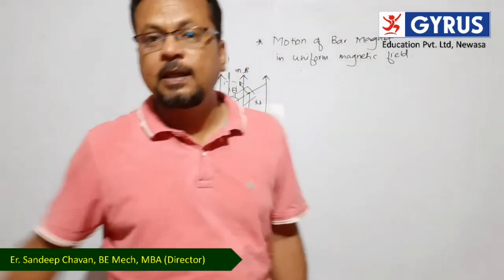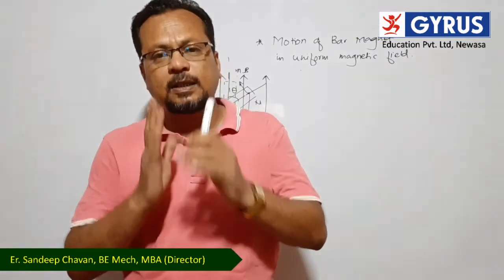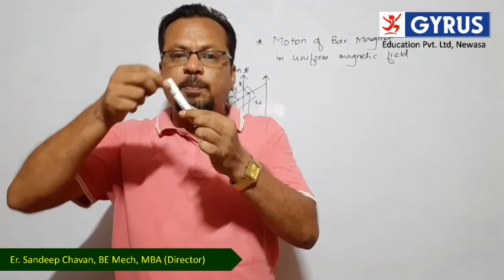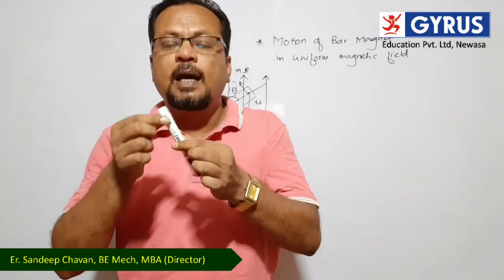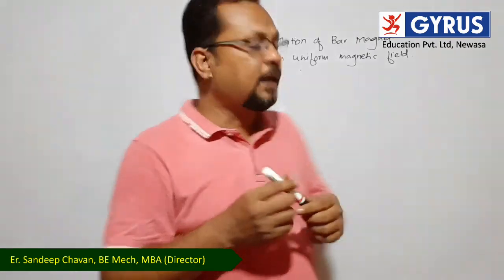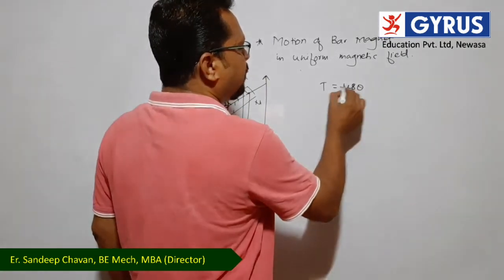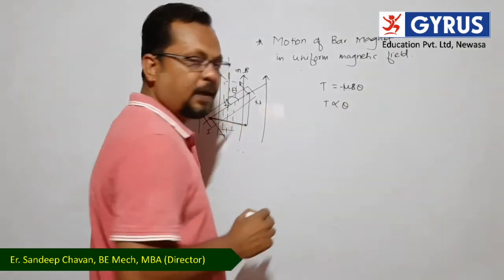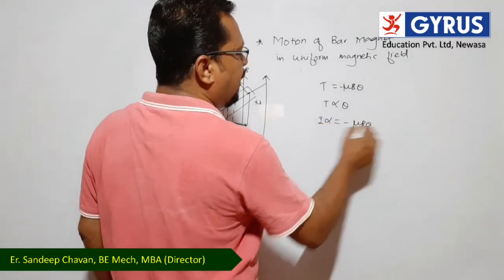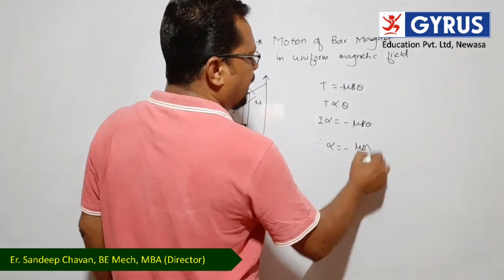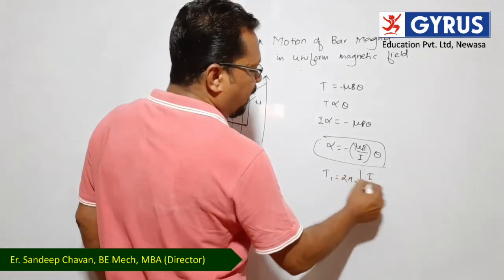To conclude: when a bar magnet is freely suspended in a uniform magnetic field with its axis aligned along the field, and is then displaced from the mean position and released, the restoring torque causes it to perform oscillations — these are angular simple harmonic oscillations. The torque is directly proportional to theta: T = −mu × B × theta. From I × alpha = −mu × B × theta, we get alpha = −(mu × B / I) × theta, and the time period is T = 2pi × √(I / (mu × B)).